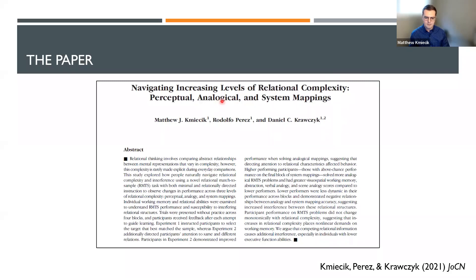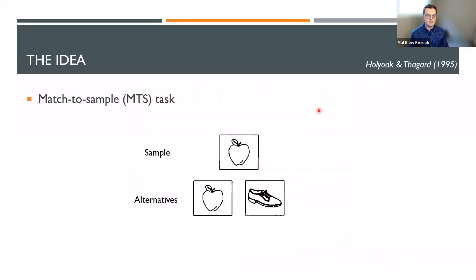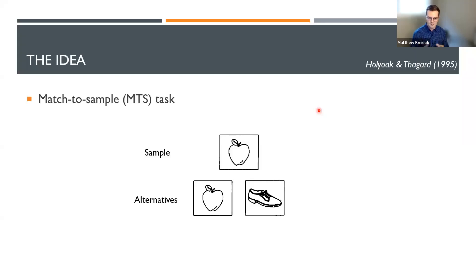Authors on this paper were me, an undergraduate at the time named Rudy Perez, and my graduate advisor Dan. This project started as a reasoning project. I had already determined I was going to do a project in traumatic brain injury and executive functioning, but I really wanted to continue some of my analogy work that I had started in my undergrad with Bob Morrison. Dan came to me with an idea about a phenomenon he observed in his reasoning class.